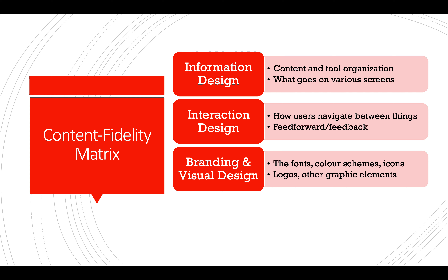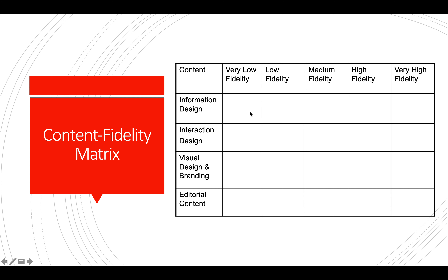With those four types of content, we have what we call the content fidelity matrix. This allows us to think about what level of fidelity or detail we're going to represent each of those four content types as we go through our prototyping process. For a given prototype, we put a check mark for each row. Maybe we want to really focus on interaction design, so information design is represented at very low fidelity, interaction design at medium fidelity, and visual design, branding, and editorial content have no attention paid to them at all. Different prototyping tools are good for different types of content.